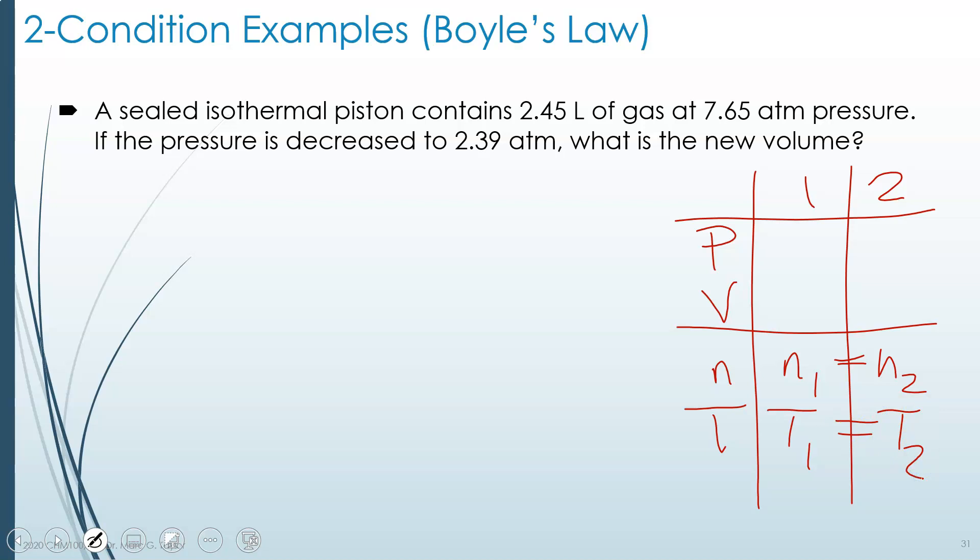We start with a volume of 2.45 liters. I'll make the decimal a little bigger. And we start with a pressure of 7.65 atmospheres. We are decreasing the pressure to 2.39 atmospheres. So if we're decreasing the pressure, we expect volume 2 to go up. Remember, these are inversely proportional. And now we can use our equation.